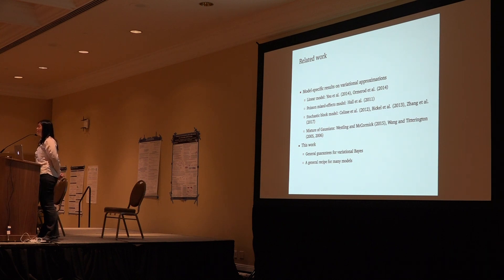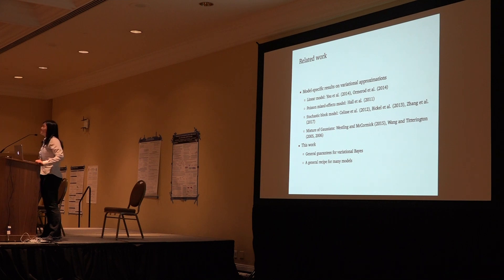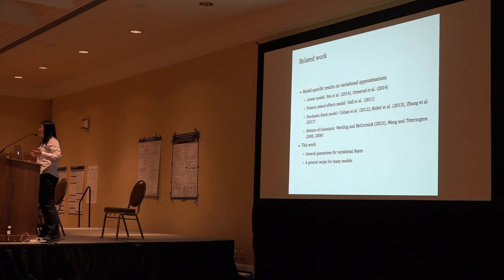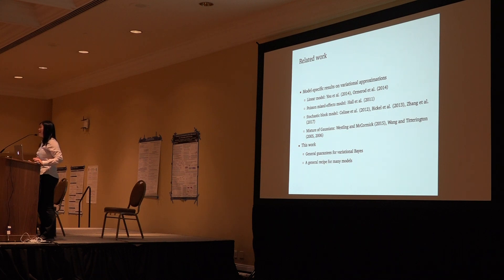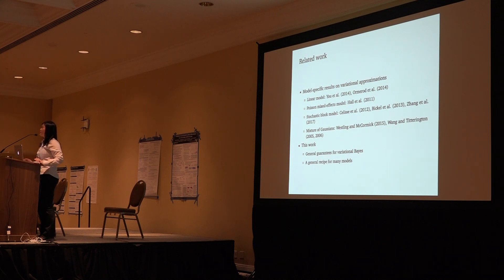Audience: What happens if the model is misspecified? This is already an issue with normal Bayesian inference, and now there's an extra layer of complication due to variational approximations. Do you have any results on that? Speaker: I haven't developed any results on that yet, but it's a great question. I believe similar results are doable — for the classical Bernstein-von Mises theorem, Bickel and Kleijn in 2012 already characterized it under model misspecification, obtaining a certain level of consistency and asymptotic normality. But the requirements on the level of misspecification, and whether you can recover the truth or the optimal KL minimizer, involve a lot of nuance, so the result wouldn't be as clean. But these kinds of results are definitely doable.